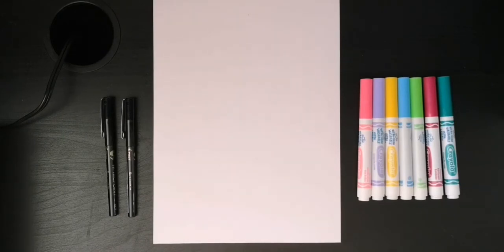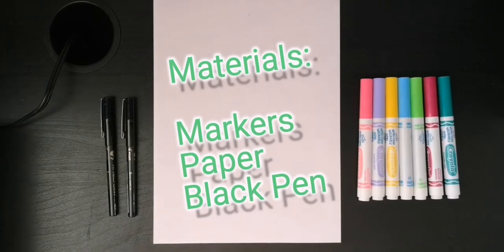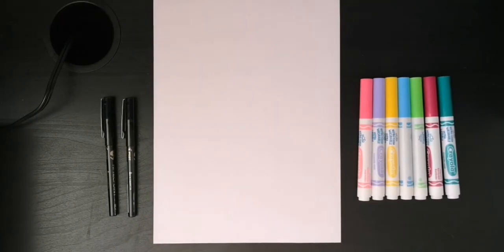So let's look at materials. We have markers, paper, and a black pen. Super simple materials but you can always change these up if you want. You can use wax crayon, pastel, pencil crayons, you can use a sharpie or even a pencil to help you draw so if you make mistakes you can always erase it. So let's get started.